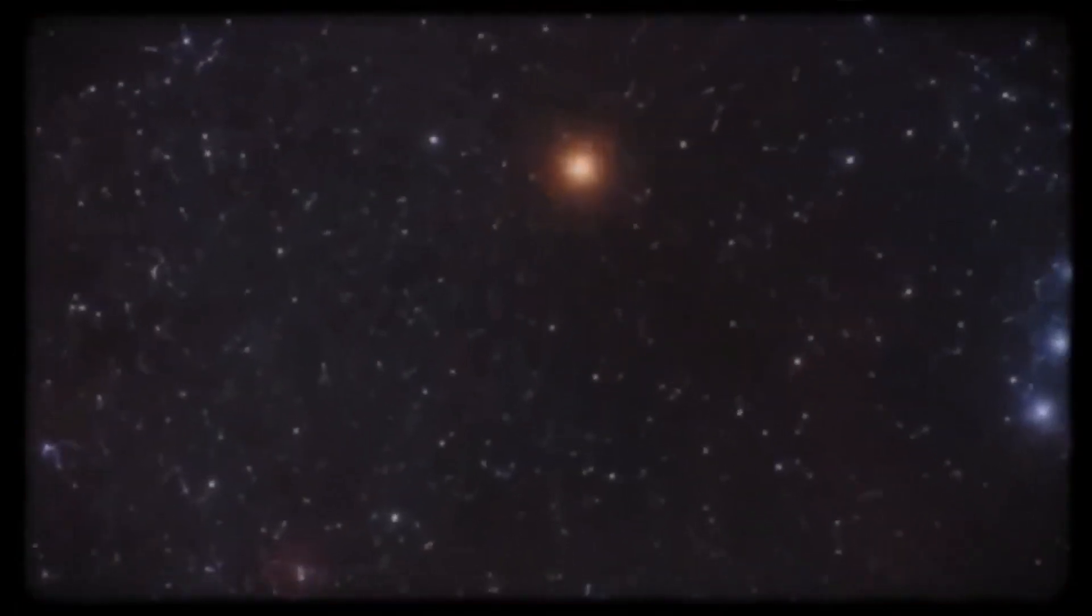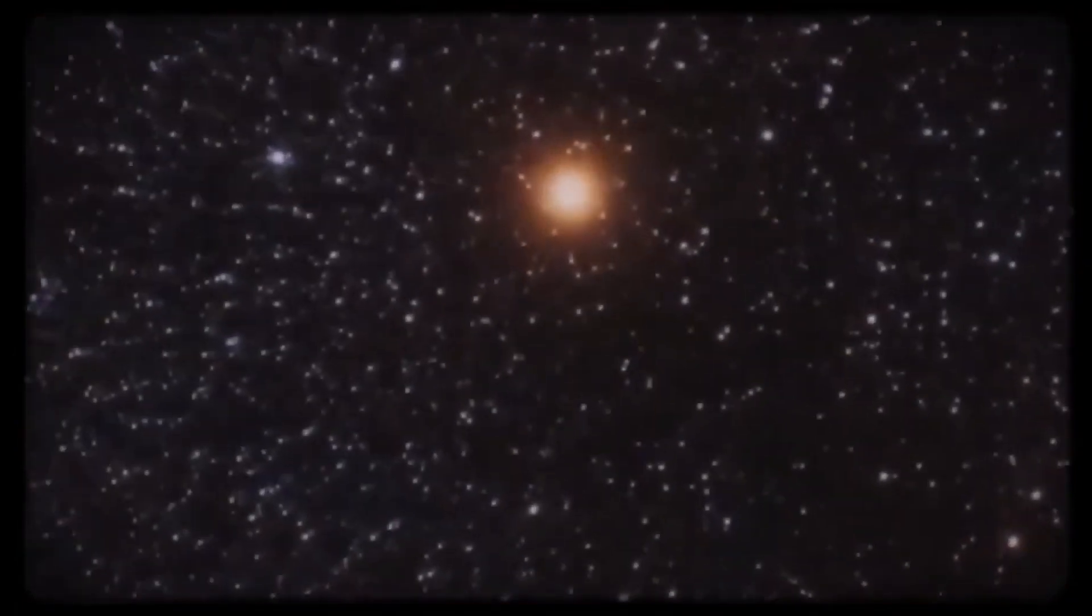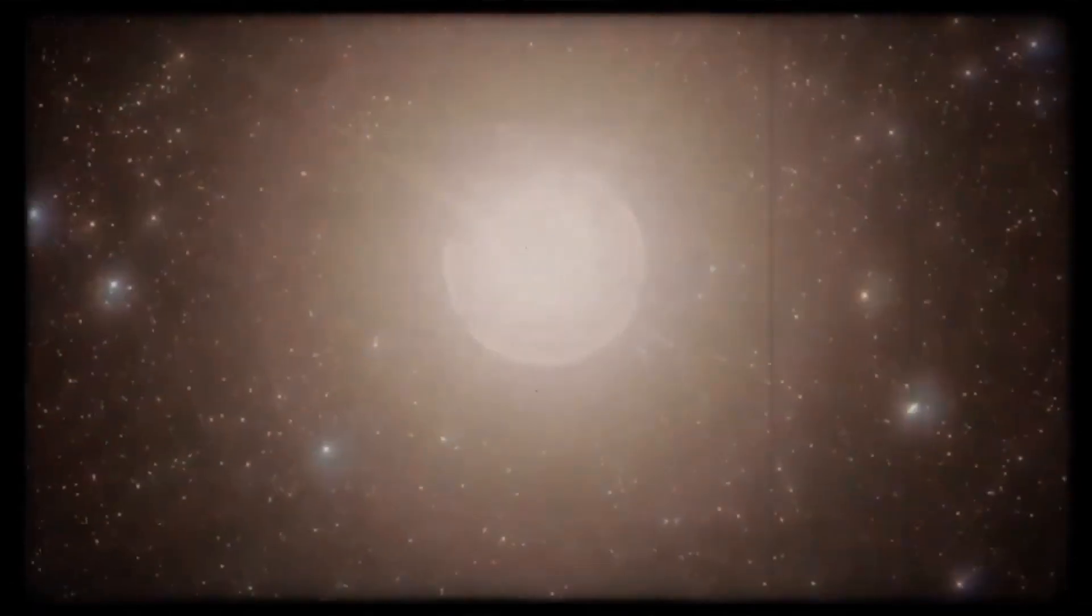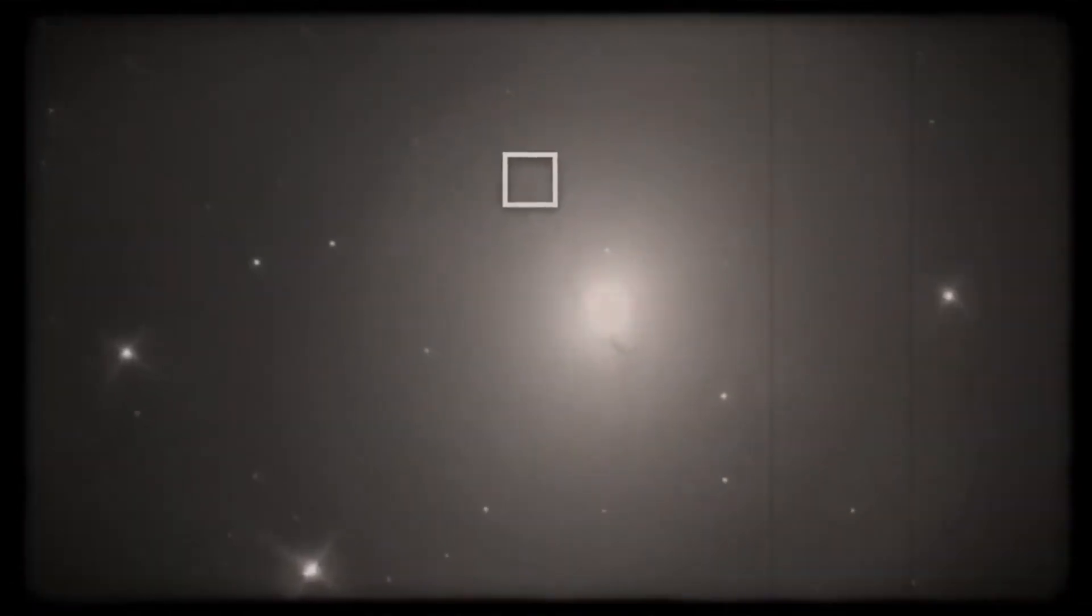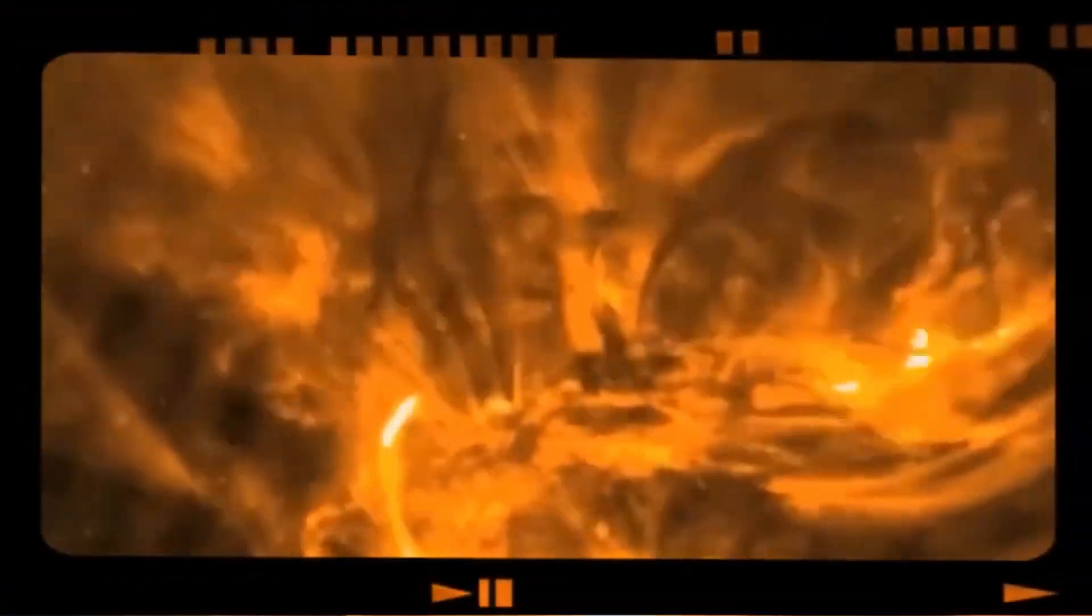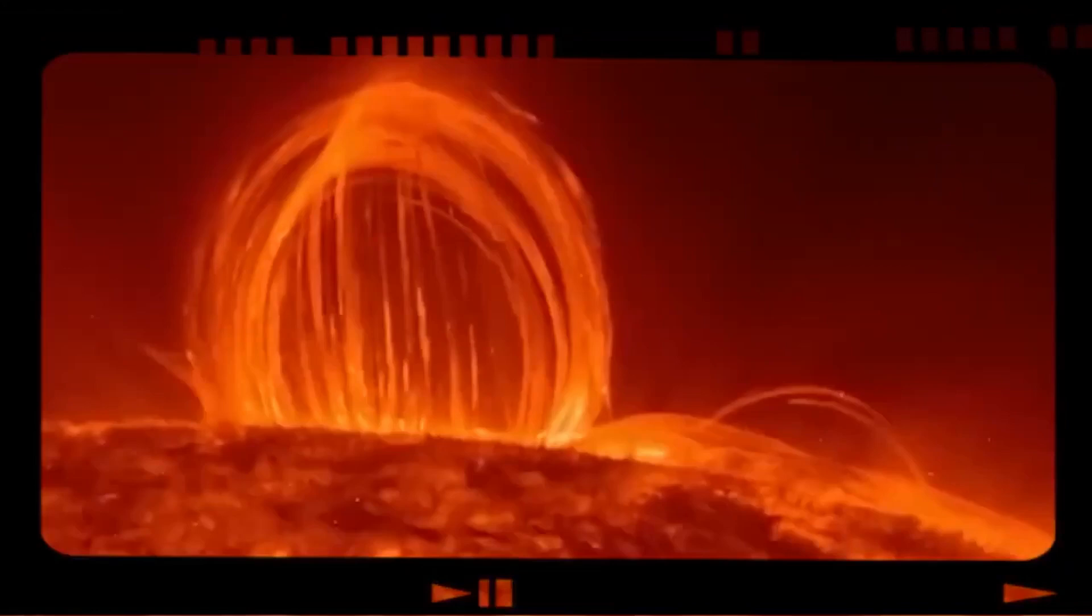Picture Betelgeuse as a colossal giant, a massive star in the twilight of its existence. This celestial behemoth in its late stages of life possesses dimensions so vast that if we were to transplant it to the heart of our solar system, it would stretch outwards, reaching as far as the orbit of Jupiter. This gravity sets the stage for a cosmic finale that is both majestic and formidable.